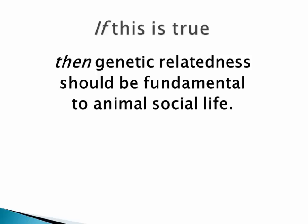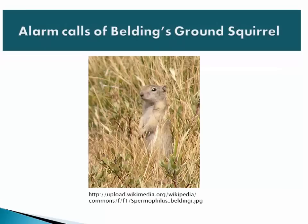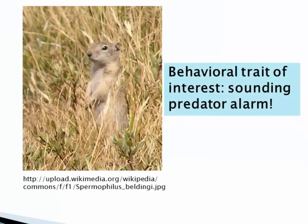By the 1970s, biologists went into the field and started testing this. One of the first famous tests of Hamilton's Rule was a study of alarm calls in Belding's ground squirrel — a small ground squirrel that lives in California. When a predator such as a coyote, badger, or eagle comes around, some of these squirrels will stand up and shout an alarm so the rest run and hide. This is the behavioral trait of interest that we want to explain.